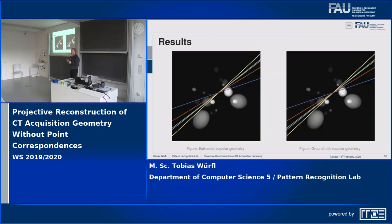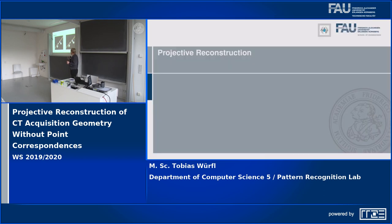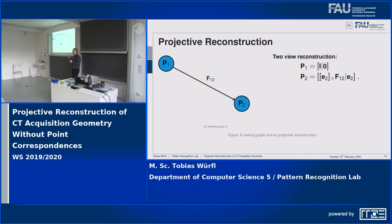Does it work? Here we have an image where my algorithm estimated the epipolar geometry without point correspondences; on the right is the ground truth. Visually we are doing very well, and the numerical results back this up. Now, fundamental matrices are not the geometry we want in the end. We want to reconstruct the geometry of our scene using only fundamental matrices. It turns out that with a single fundamental matrix there is a formula to solve this: we can reconstruct the projective reconstruction of two projection matrices from a single fundamental matrix.